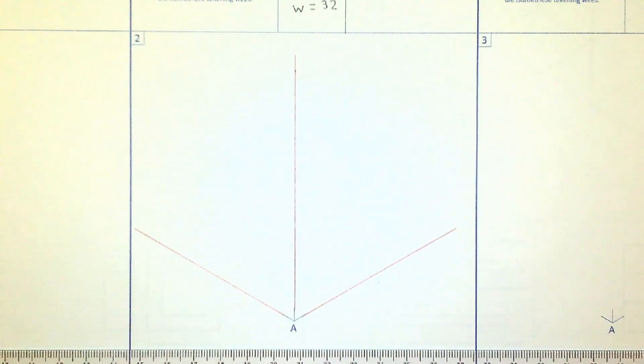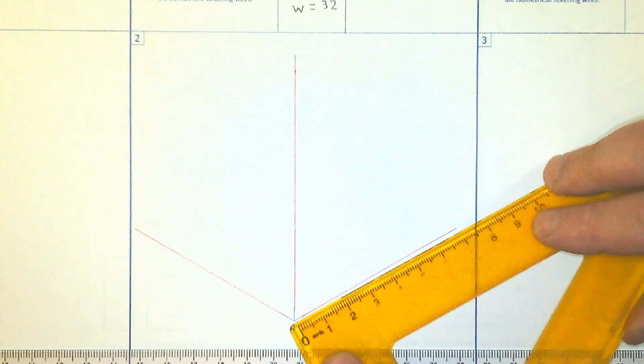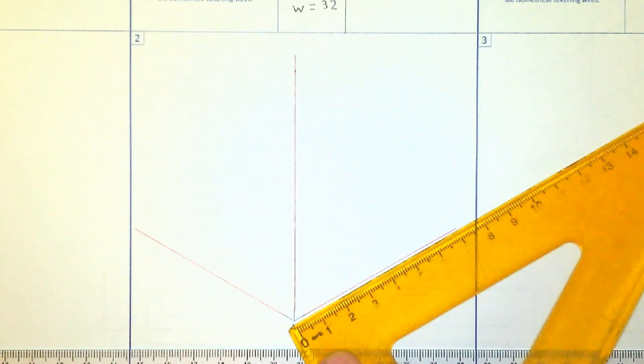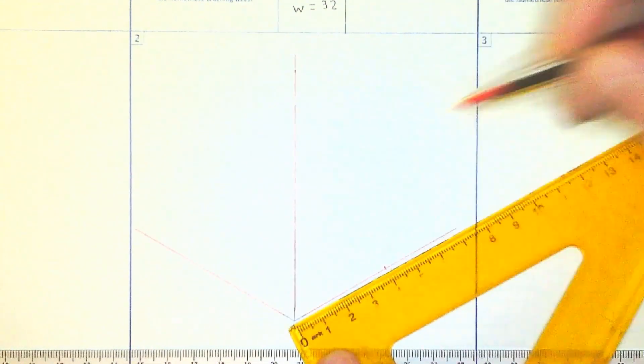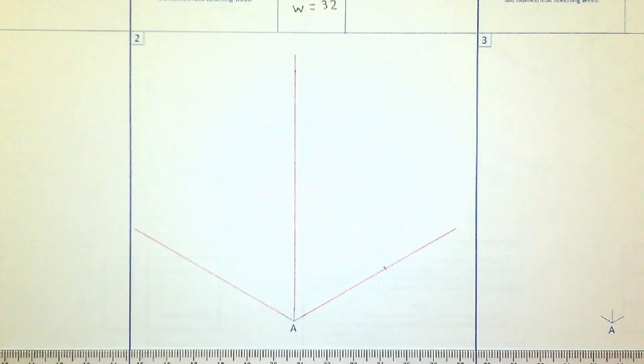So you will see it looks like a down arrow. Then we are going to add our length. Now because A has to be the lowest point, the length has to be here on the right side. And the width is going to be on the left side. And we know that the total length is 40. So we are simply going to take our measurement and mark it down. And then we know that the width is 32.